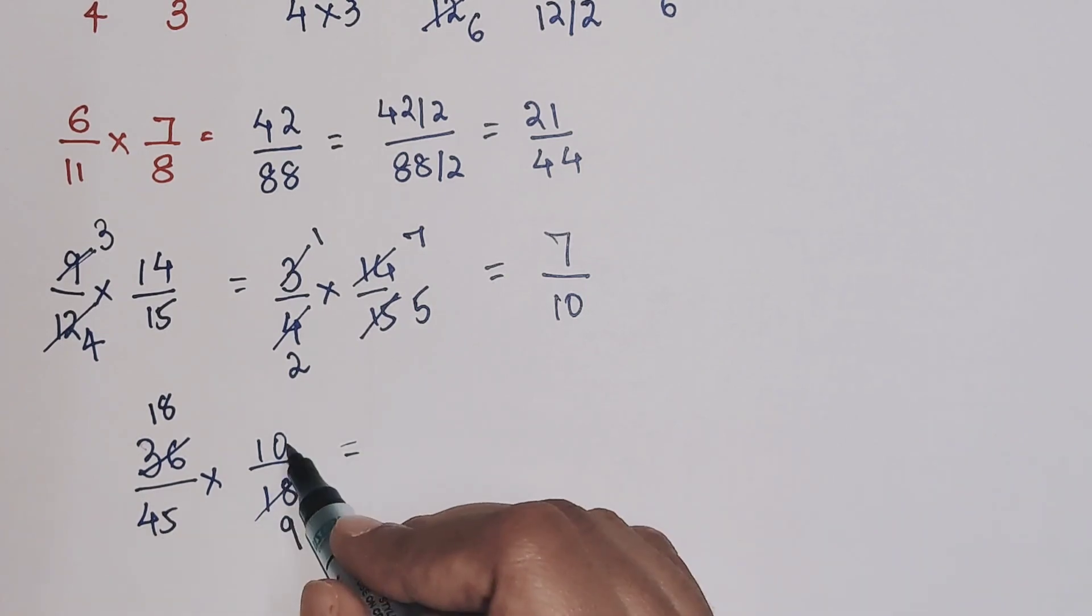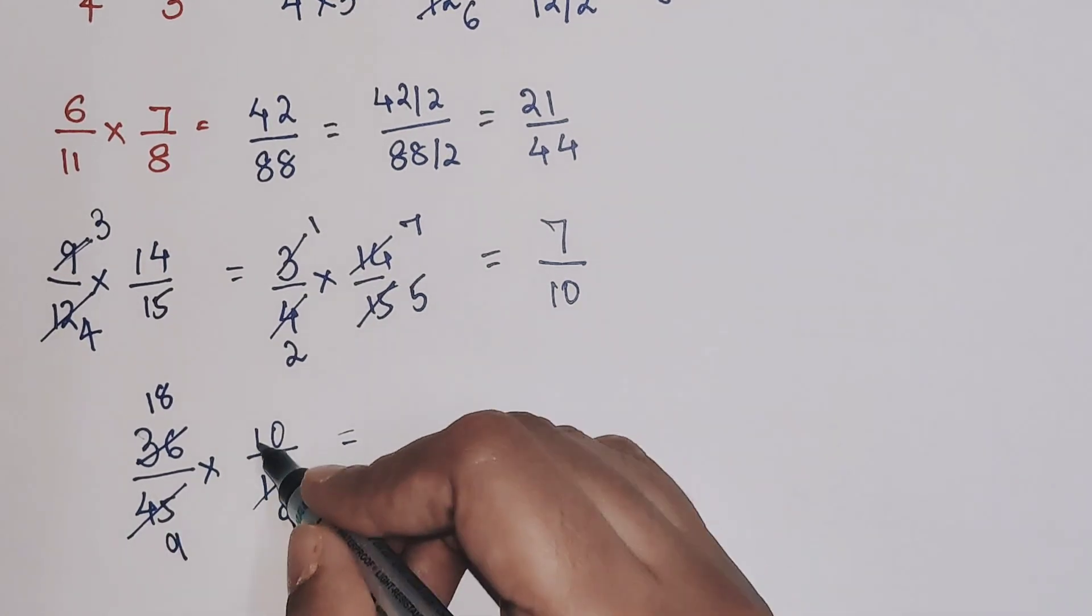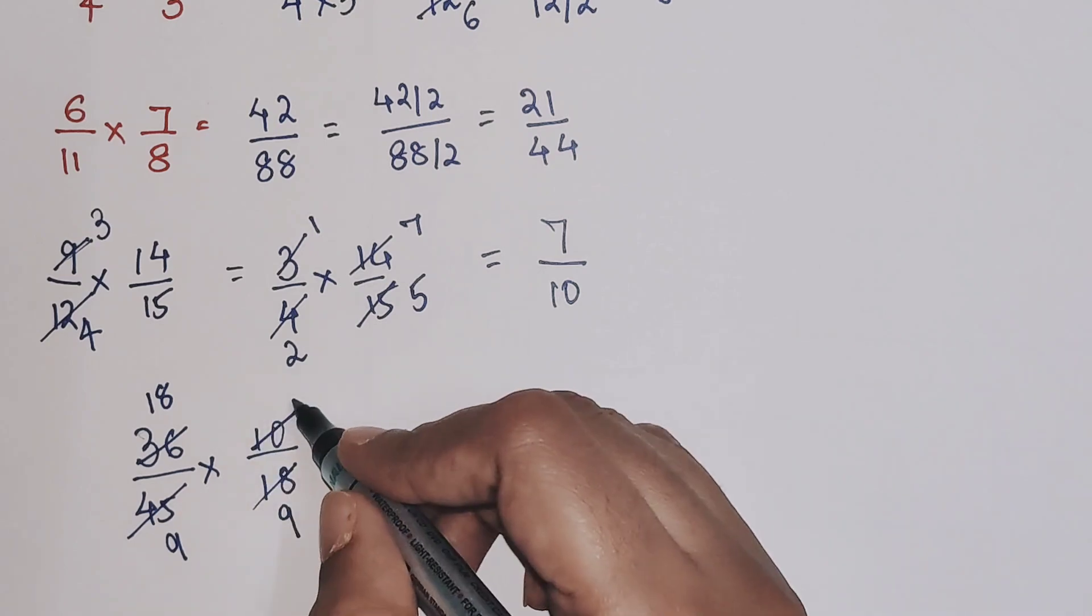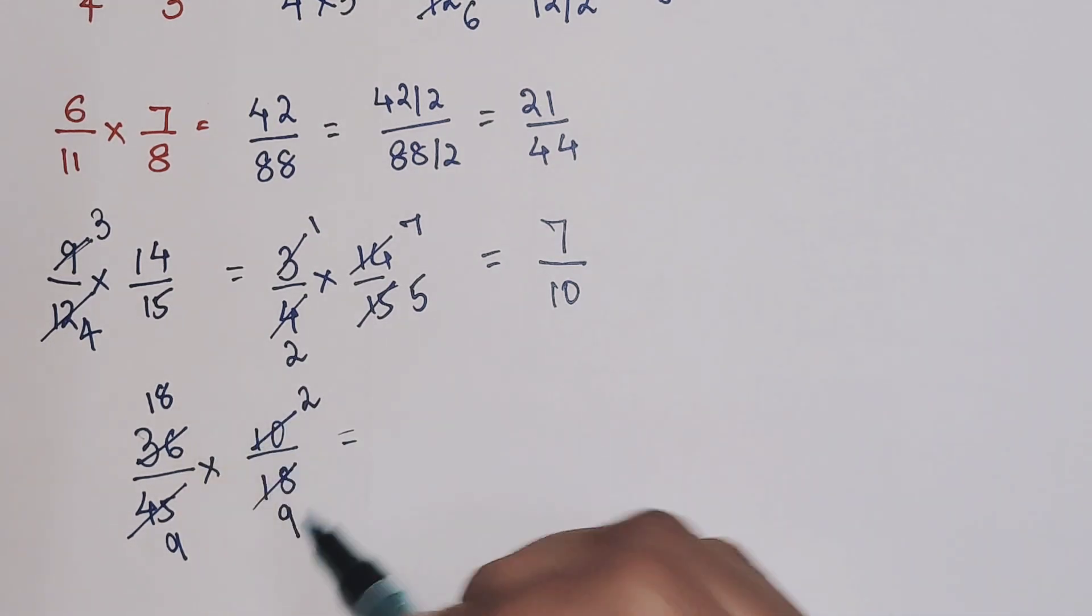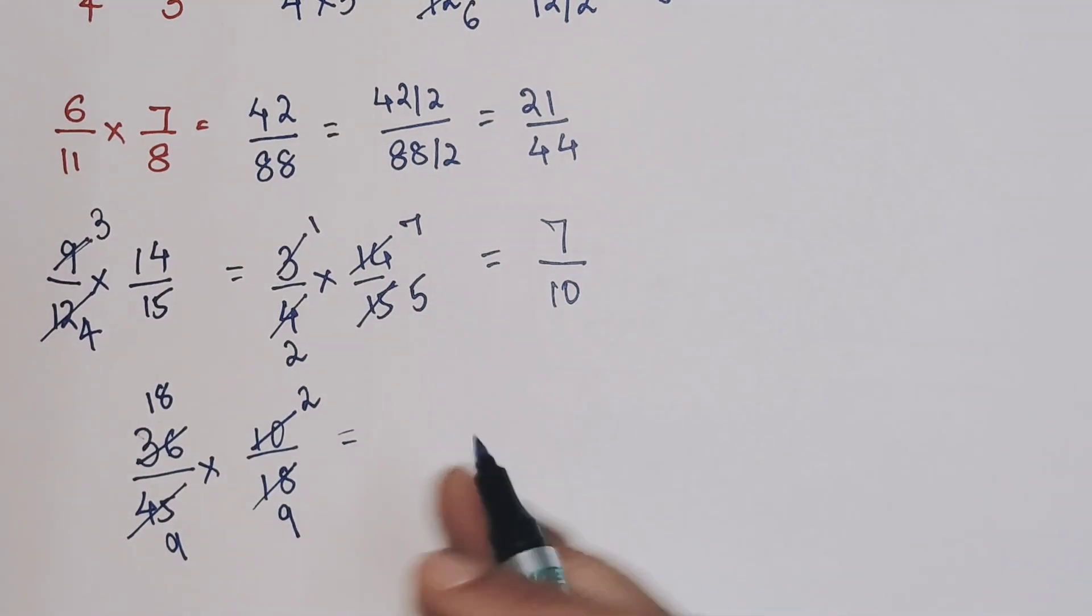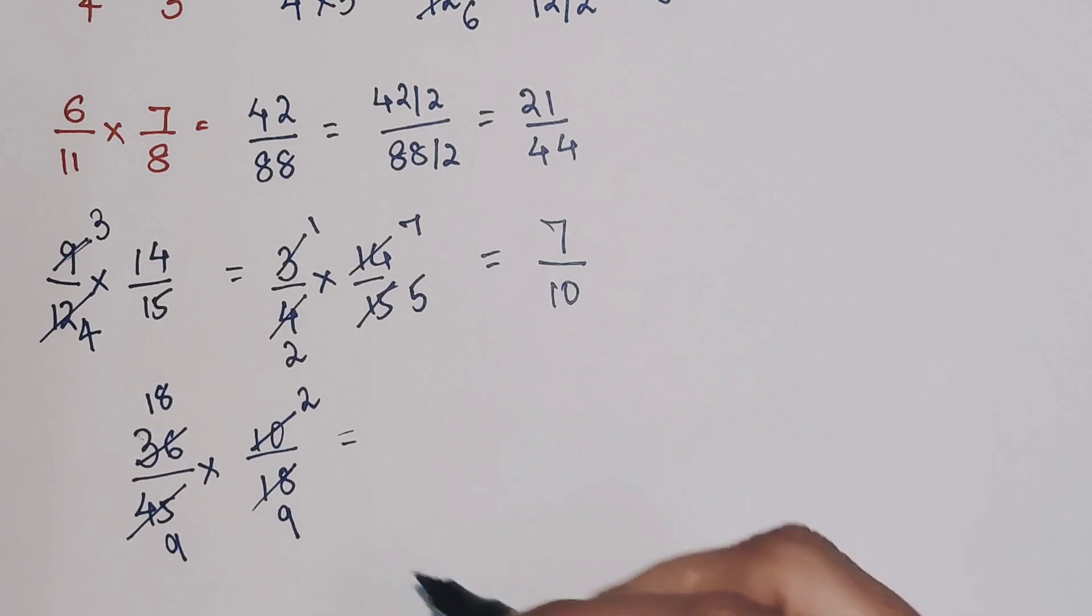And 45 and 10, both of them are going in 5 stable. So when you divide 45 by 5 you get 9, and when you divide 10 by 5 you get 2. Now see, again you can go ahead and write the fractions and then again do the cancellations, or you can do the cancellations here itself.